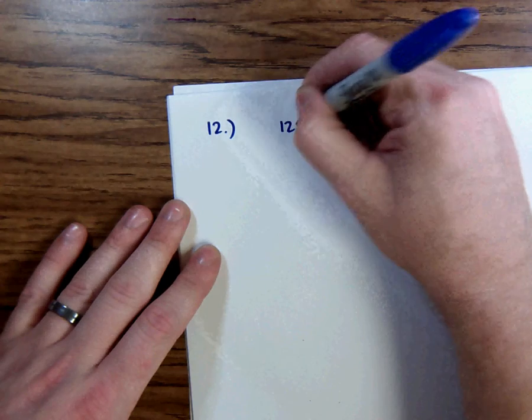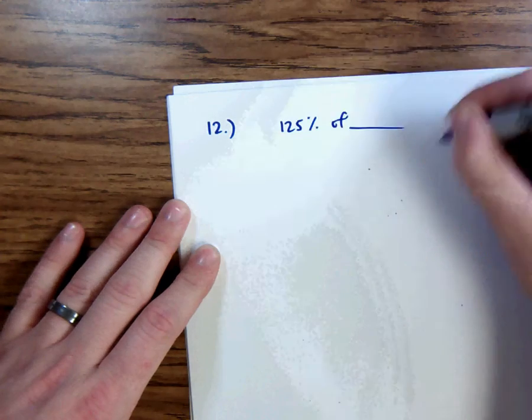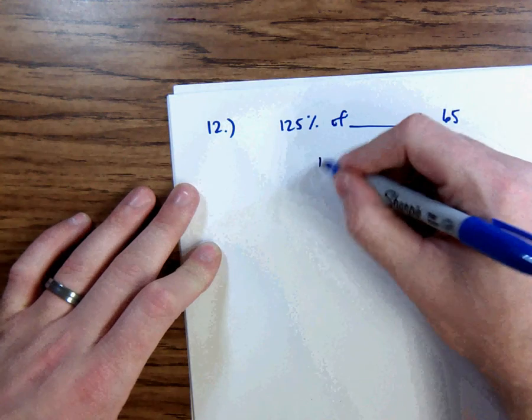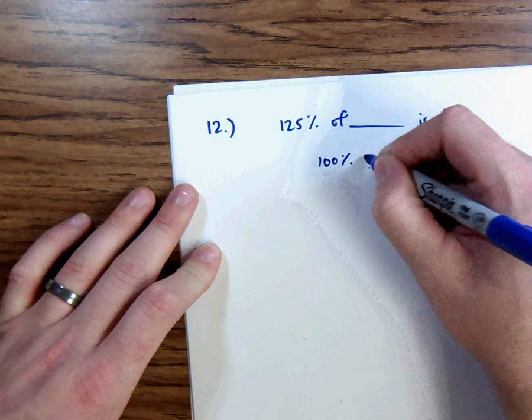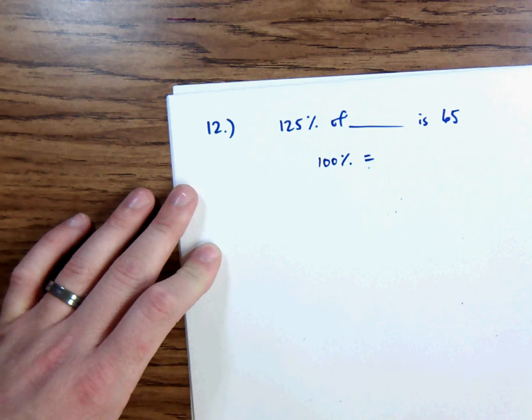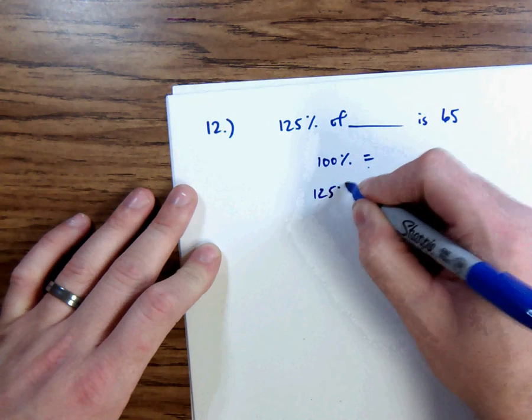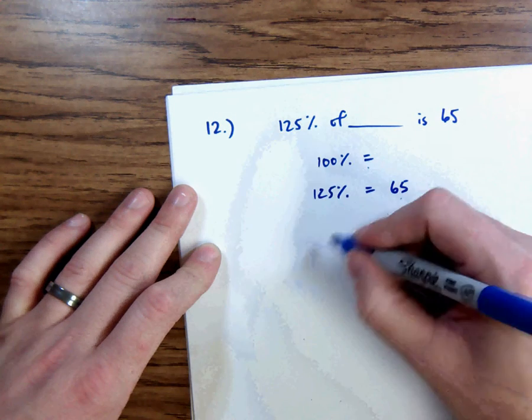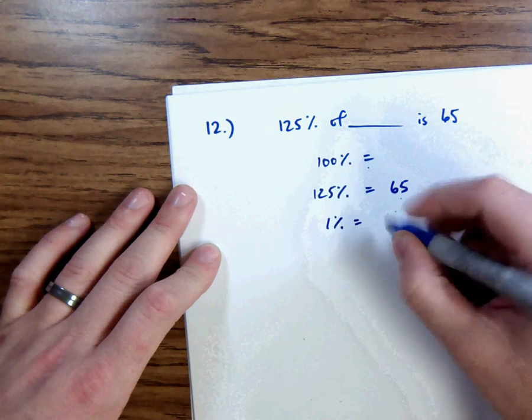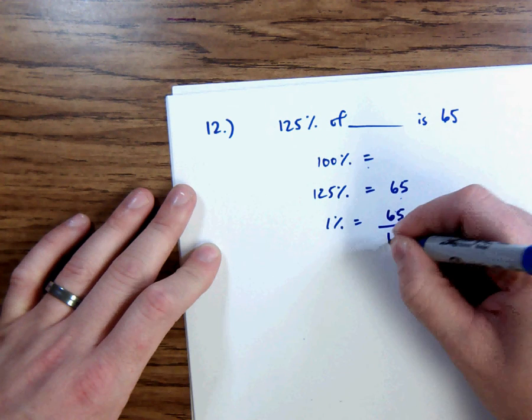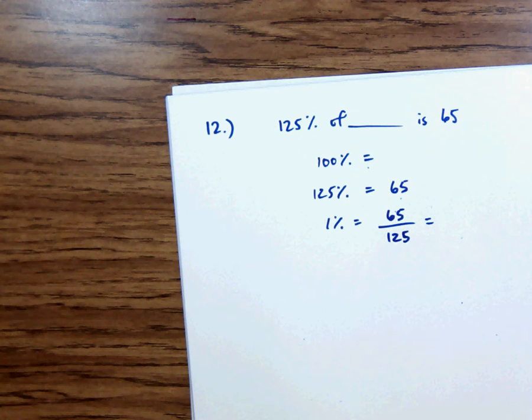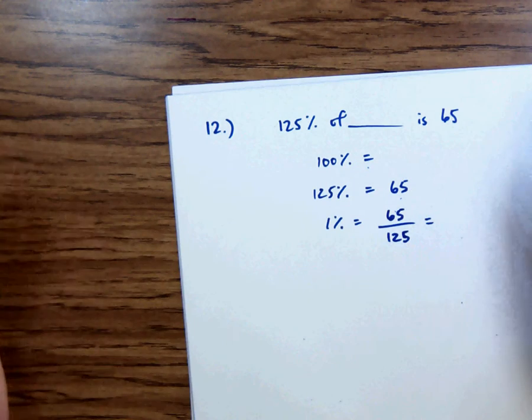Number 12, we have 125% of blank is 65. So we're going to look for 100%. We already know that 125% is equal to 65. So 1% is going to be 65 over 125. And I've noticed that that reduces. It's okay if you don't reduce it, but I noticed that it reduces now. So I'm going to maybe simplify just a little bit.